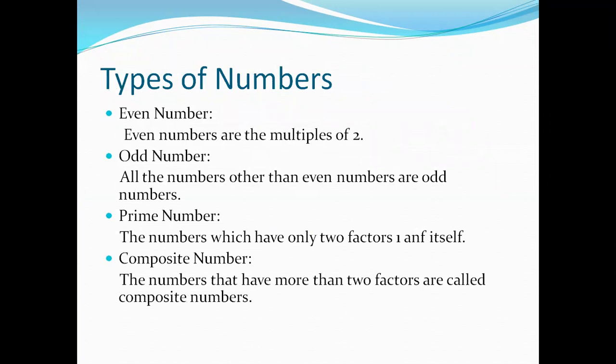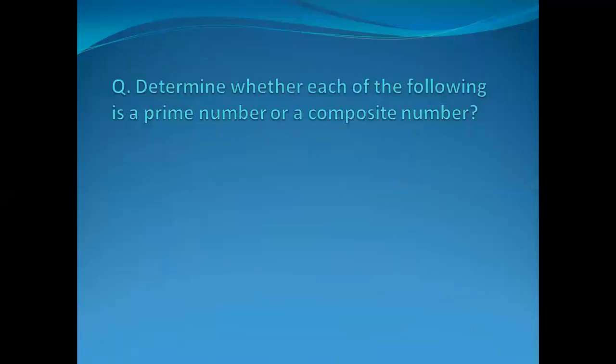Here is a slide on types of numbers, which include even numbers, odd numbers, prime numbers, and composite numbers. Even numbers are multiples of 2, and all other numbers are odd numbers. Prime numbers have only two factors: 1 and itself. Composite numbers are numbers which have more than two factors.